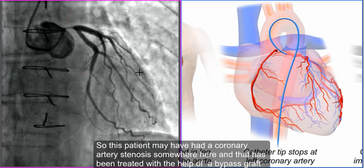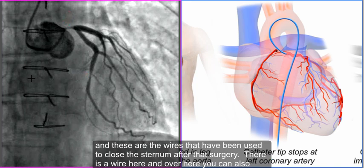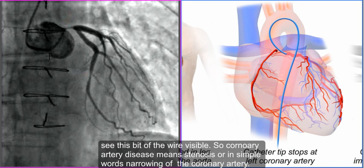As per my understanding, this patient may have had coronary artery stenosis somewhere here, and that has been treated with the help of a bypass graft. These are the wires that have been used to close the sternum after that surgery. There is another wire here, and over here you can also see this bit of wire. So coronary artery disease means stenosis, or in simple words, narrowing of the coronary artery.